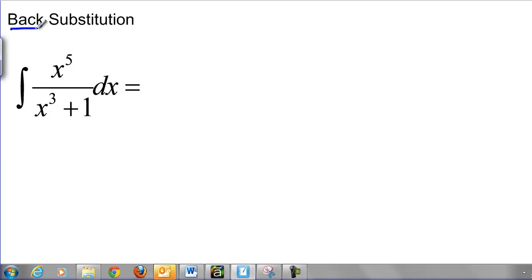We're going to do a process called back substitution to make that work. So we're going to use u equals x cubed plus 1, then du is 3x squared dx, just like before.